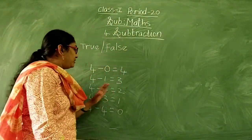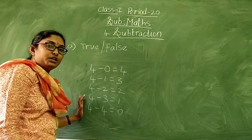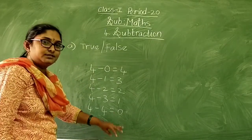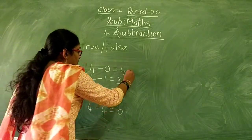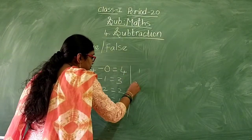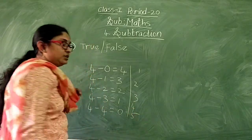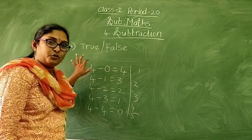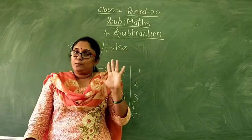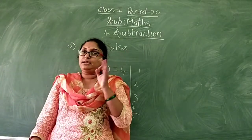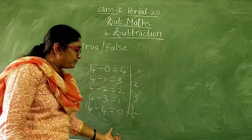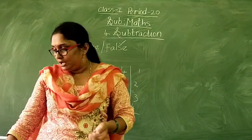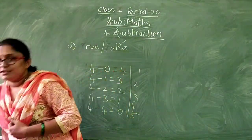By using the number 4, we can do how many subtractions? 1, 2, 3, 4, 5 — we can do 5 subtractions. So the statement 'number of subtraction families of 4 is 3' is wrong — that means false. Did you understand, children?